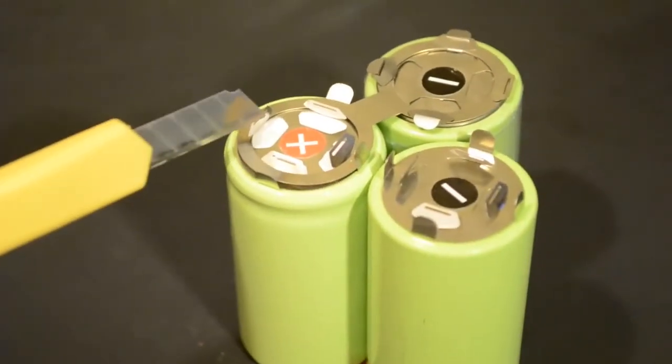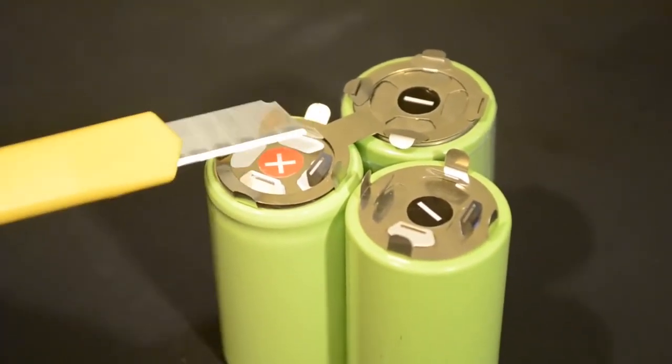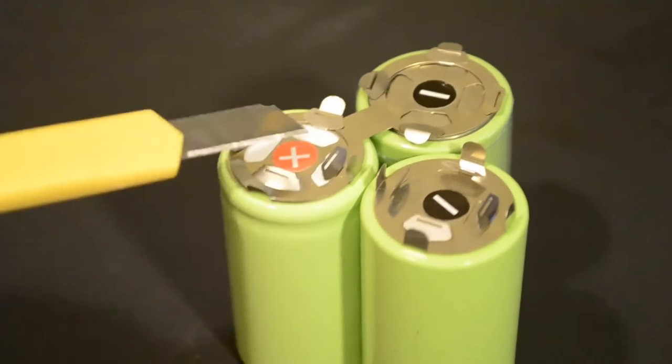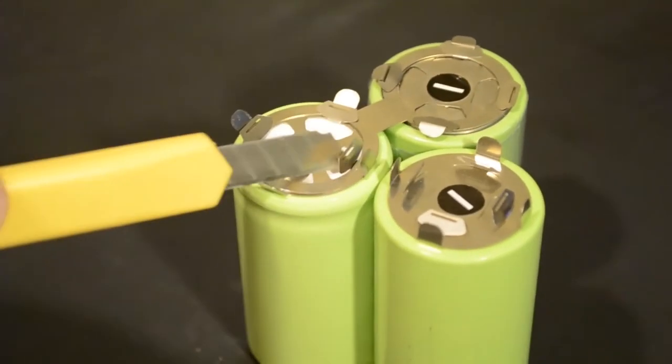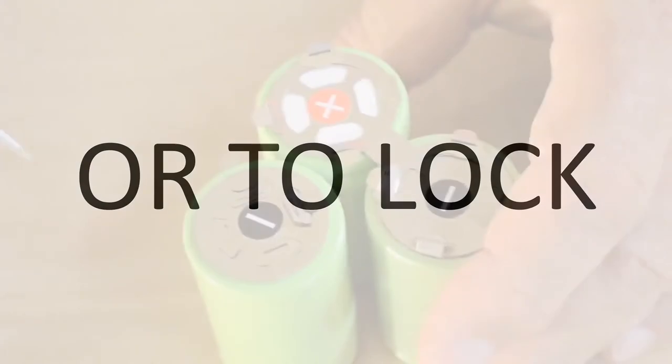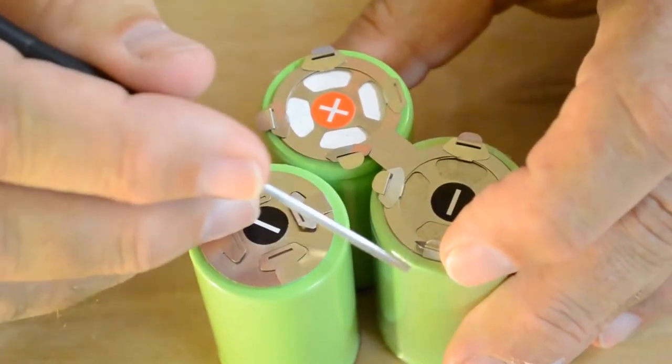Step three: refold the tabs and receivers to their original positions for a standard electrical connection. Insert the tabs in the holes.